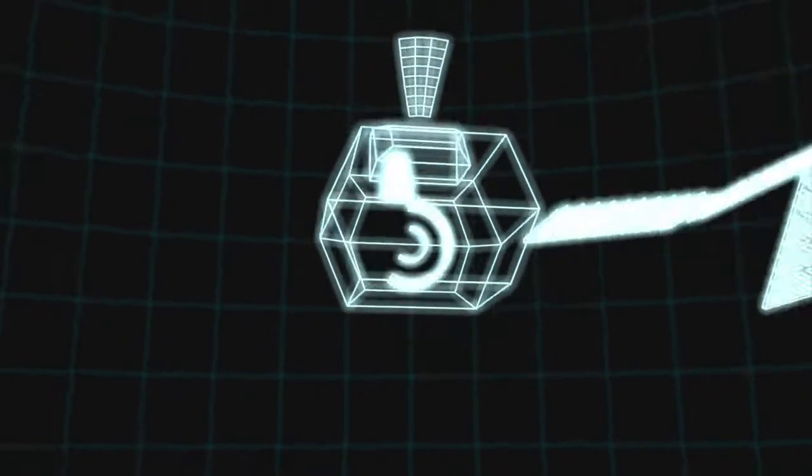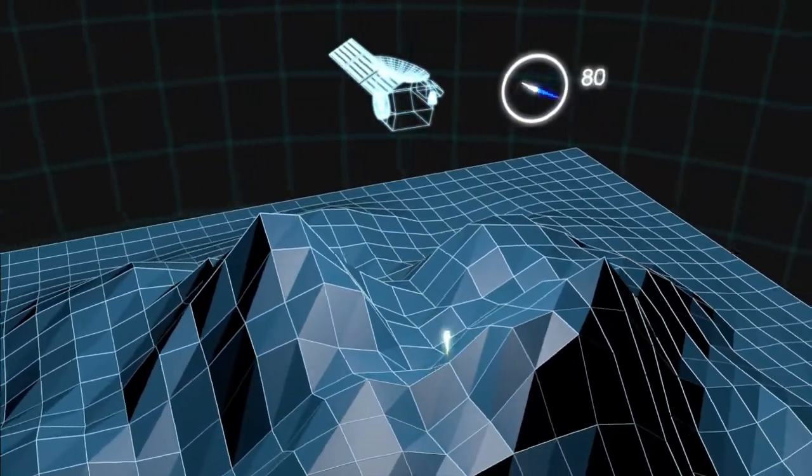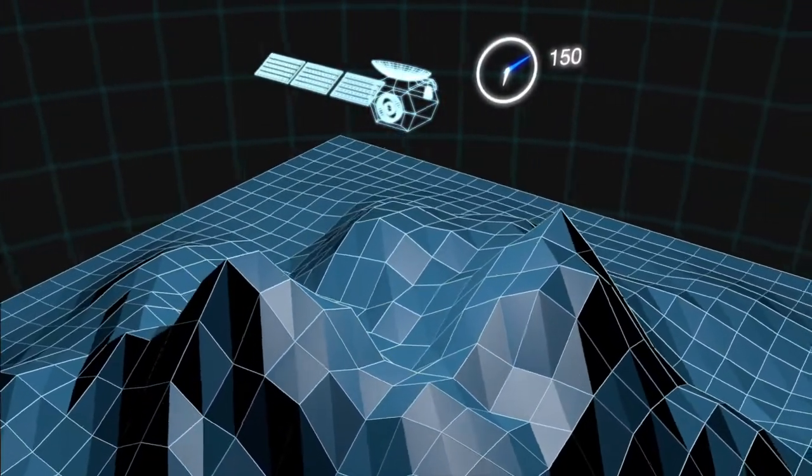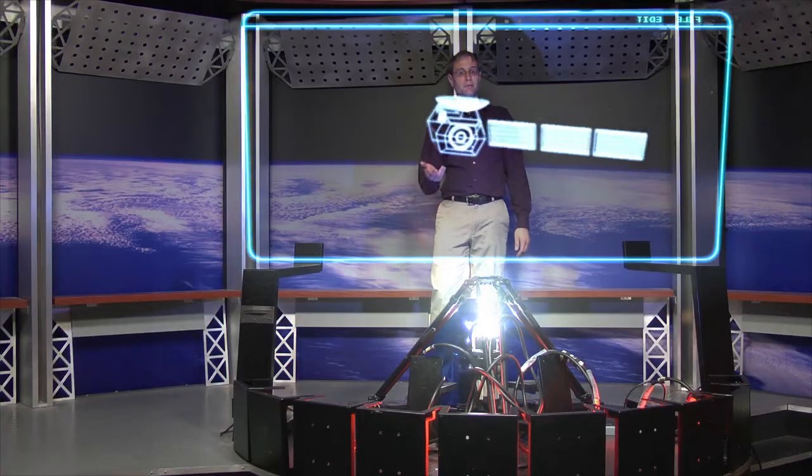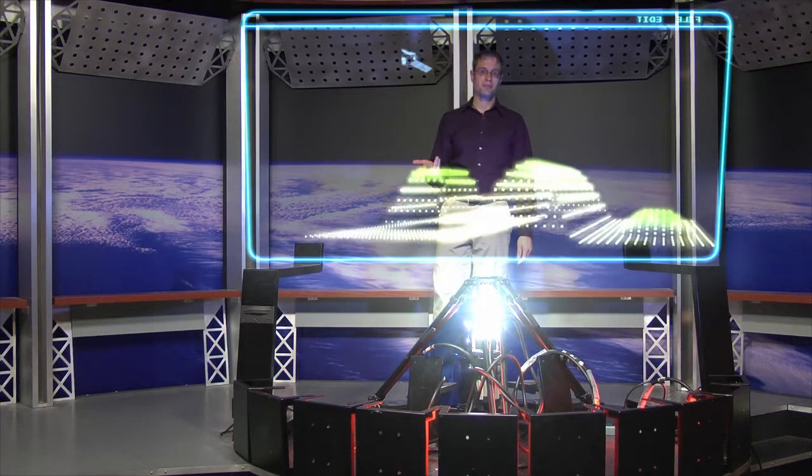To make these measurements, the LiDAR instrument first sends a laser pulse down to the planet's surface. The pulse hits the ground and reflects back to the instrument, where an onboard counter measures the time it took the pulse to make its trip. That gives a precise measurement of the distance between the instrument and the ground with respect to the planet's gravitational center.